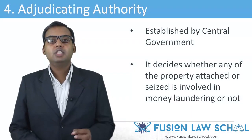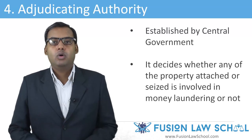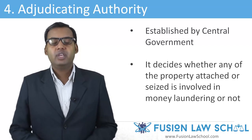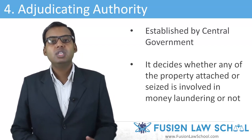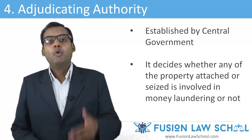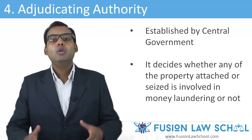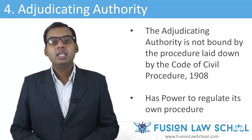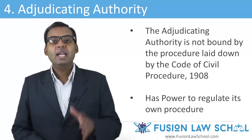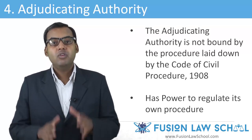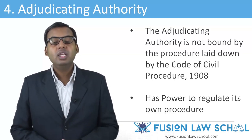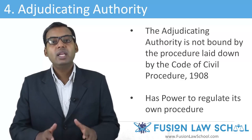The fourth important feature of PMLA is the Adjudicating Authority, appointed by the Central Government through notification to exercise jurisdiction, powers, and authority conferred under PMLA. It decides whether any property attached or seized is involved in money laundering or not. The Adjudicating Authority is not bound by the procedure laid down by the Code of Civil Procedure 1908, but is guided by the principles of natural justice and is subject to the other provisions of PMLA. The Adjudicating Authority shall also have the power to regulate its own procedures.